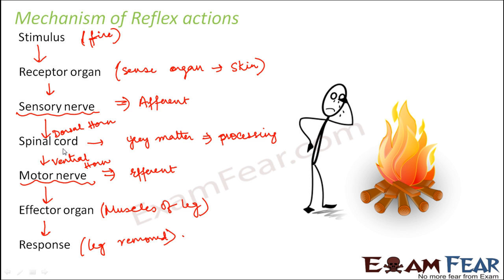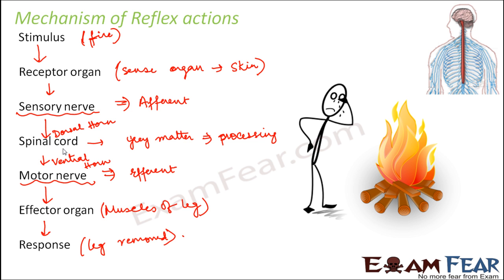That is the mechanism of reflex action, and this entire flow is also known as the reflex arc. This is how we can relate the spinal cord with the brain.